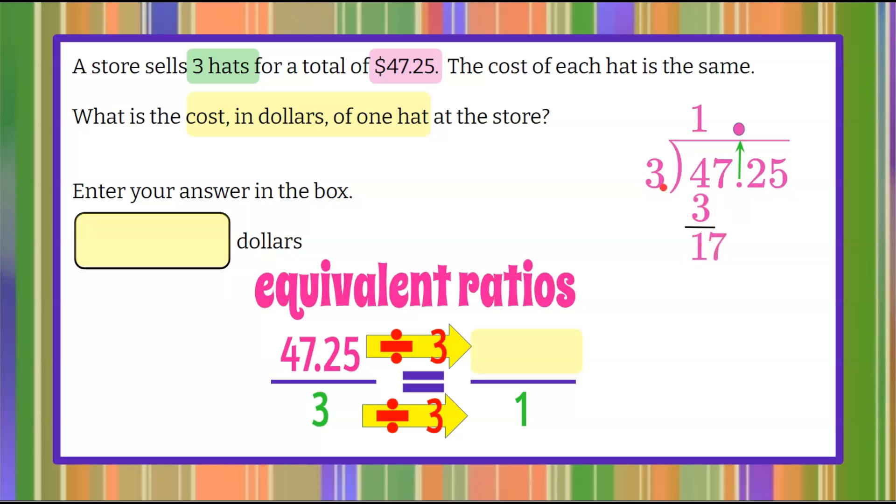Now we want to know three into 17. That's five times. Five times three is 15. 17 subtract 15 is two.